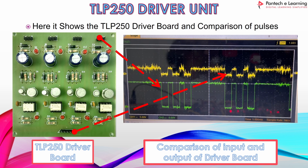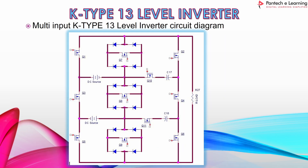This is the circuit diagram for the K-type 13 level inverter. Here we are using 11 switches — MOSFETs. The MOSFET used here is IRF840. The 11 MOSFETs are labeled Q1 through Q11. We can measure the output voltage across the R-load.